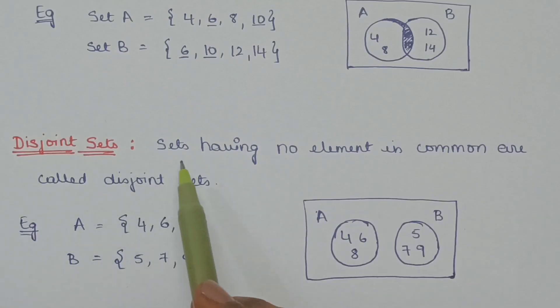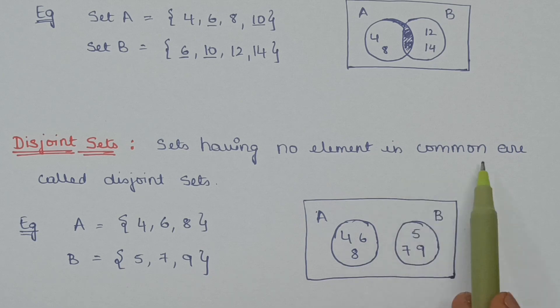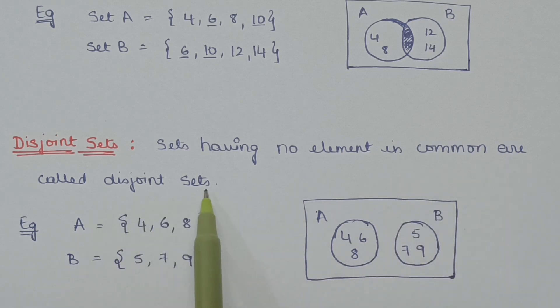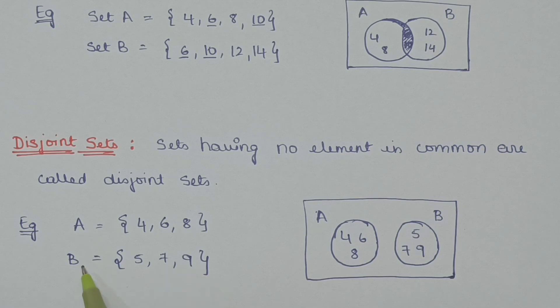Disjoint sets. Sets having no elements in common are called disjoint sets. Set A and set B have no elements in common, so these two sets are disjoint sets.